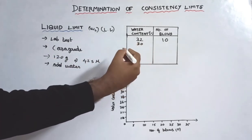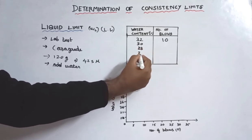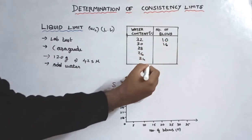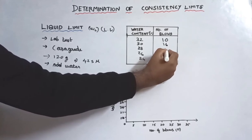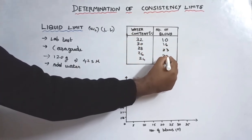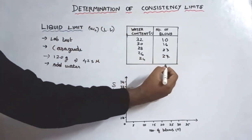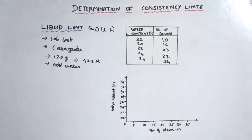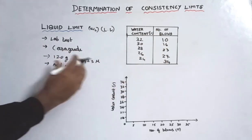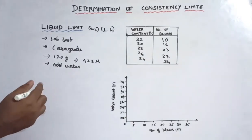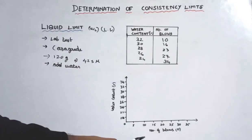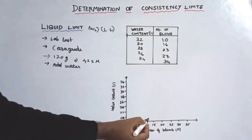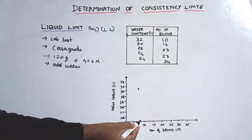These are repeated trials. We vary the water content: say 30, 28, 26, 24, and check the respective number of blows for each. We then check the values on a graph. On the Y-axis, water content is in percent; on the X-axis, the number of blows is N. For example, 32% water content corresponds to 10 blows.